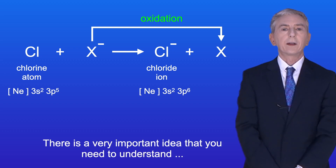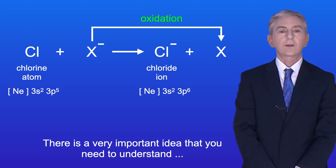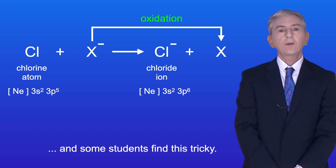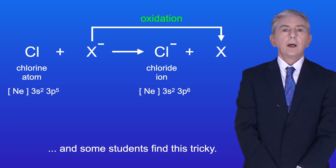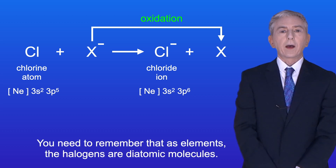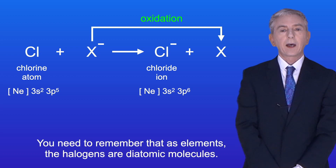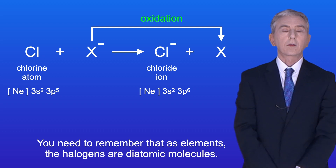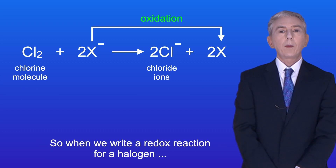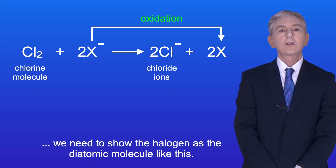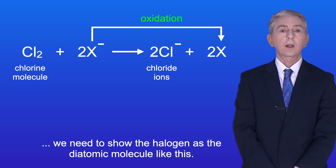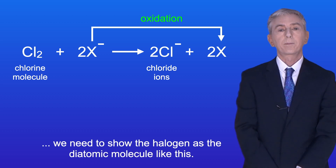Now there's a very important idea that you need to understand, and some students find this tricky. You need to remember that as elements the halogens are diatomic molecules. So when we write a redox reaction for a halogen, we need to show the halogen as the diatomic molecule like this.